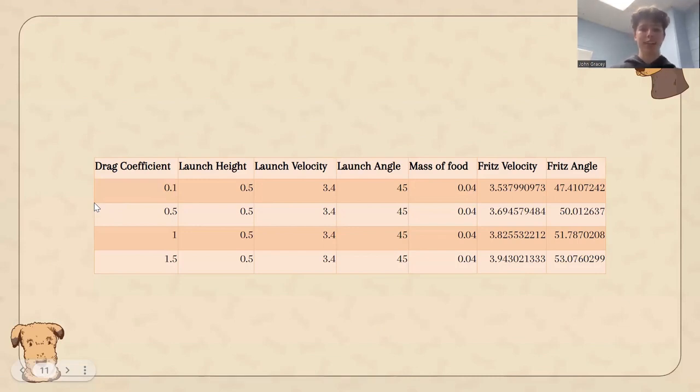All parameters for the food here were fixed, save for drag coefficient, and we find that depending on drag coefficient, Fritz would have the most success with an initial velocity between 3.5 and 4 meters per second and an initial angle between 47 and 53 degrees. This is reasonable considering that we estimated the initial or the final angle of the food with the ground to be between 45 and 50 degrees, so we conclude that these would be the optimal results for Fritz.